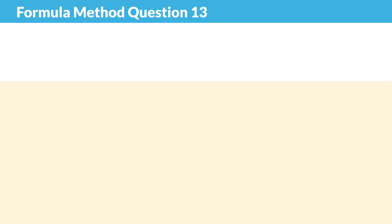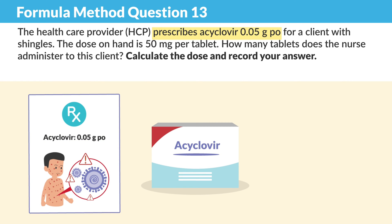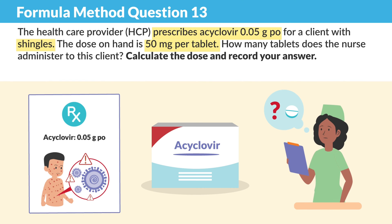Moving on to question 13, the unlucky number here. So the healthcare provider, the HCP, prescribes acyclovir 0.05 grams PO for a client with shingles. The dose on hand is 50 milligrams per tablet. How many tablets does the nurse administer to the client?